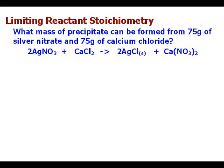First, if you don't have it given to you, you will need to write a balanced equation for it. Here's the balanced equation for this reaction: 2 silver nitrates plus calcium chloride (CaCl2) yields 2 silver chlorides and Ca(NO3)2 for calcium nitrate.